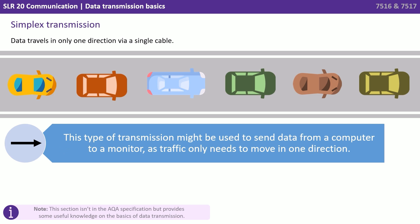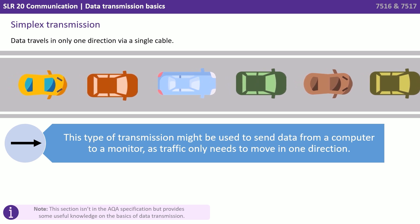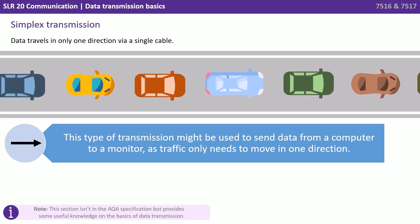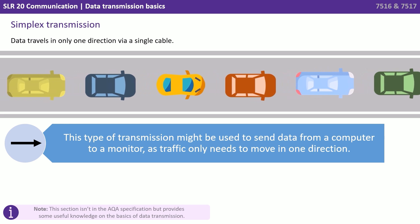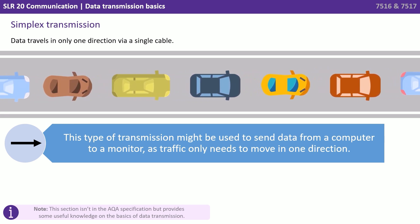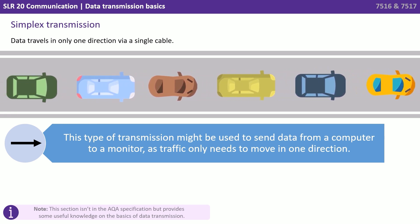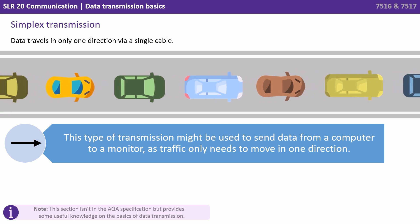First we have simplex transmission. This is where data travels in only one direction via a single cable. This type of transmission might be used to send data from one computer to a monitor, as traffic only needs to move in one direction.